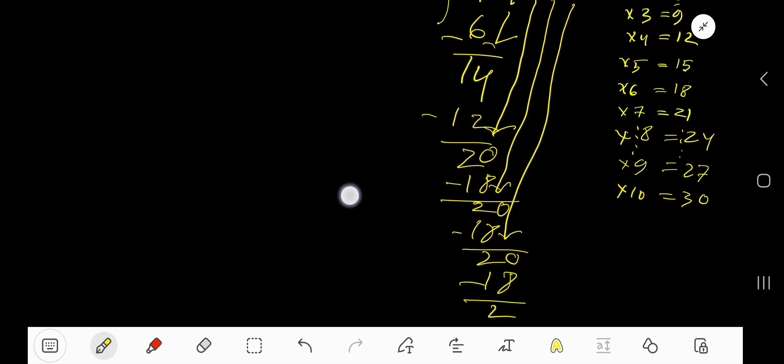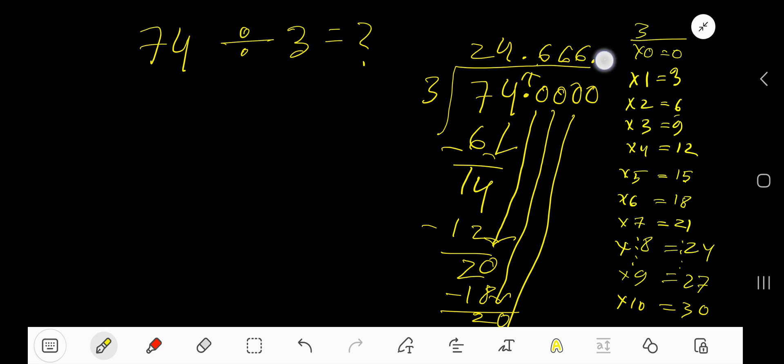Now place 3 dots. So 24.666... is your answer. You can place a bar over 6 to mean that this 6 is repeating, so 24.6 with a bar is another form of your answer. Thank you.